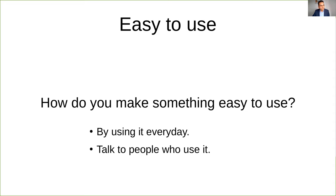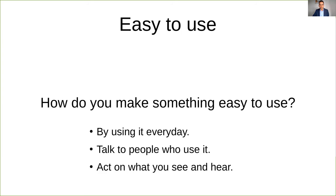The second approach is to talk to the people who use the software. This gives a lot of insight into what needs to be done, what is missing, and what is working well. Humans who use your software are the best way to get feedback — talk to them, that's very important. And finally, when you hear these things from people, you have to act on them and address the issues reported.